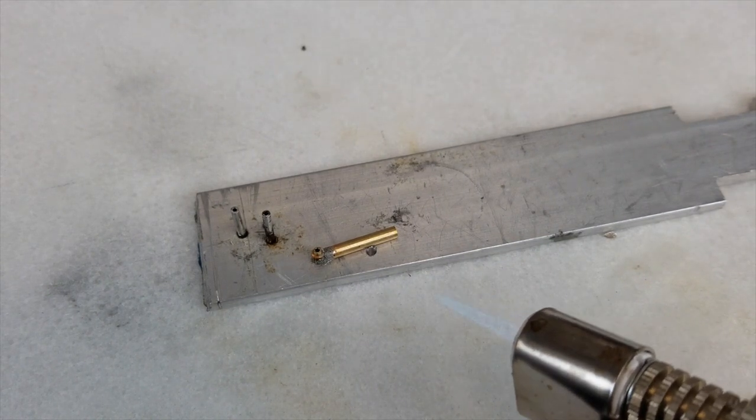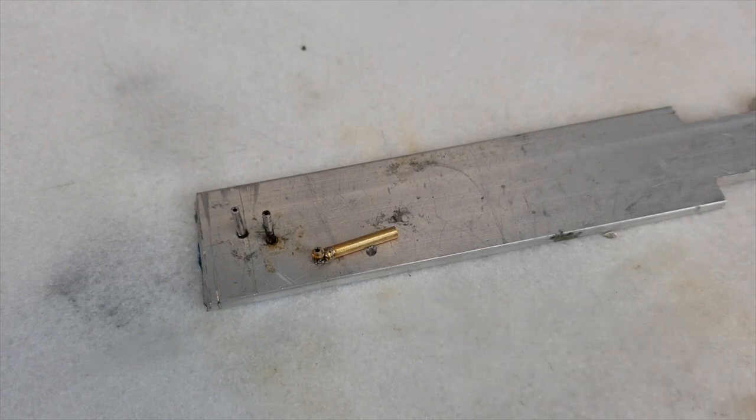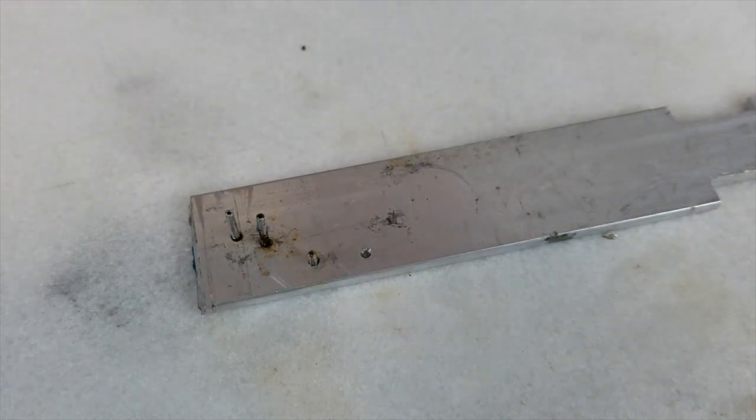The solder I'm using is a silver bearing solder paste with flux added in. It's super easy to add to these tiny parts and melts at a lower temp and provides a pretty solid joint.